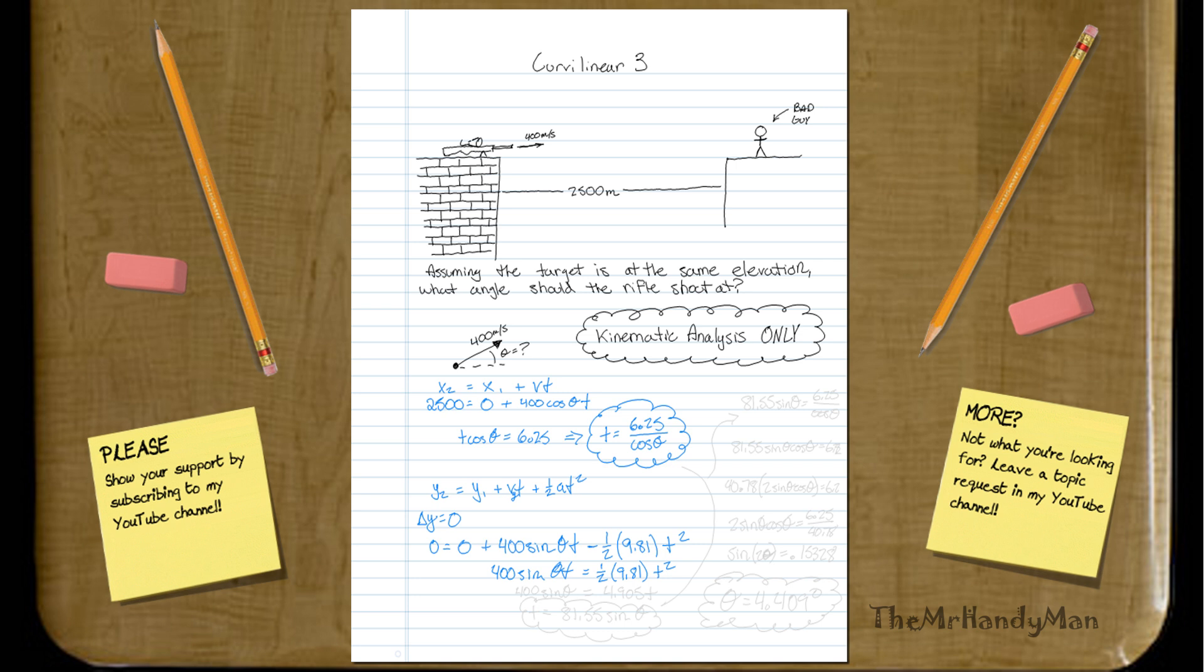So as we clean it up a little bit more, we go 400 sine theta equals 4.905 t. And then we just solve for t, so we can get t will equal to 81.55 sine theta.